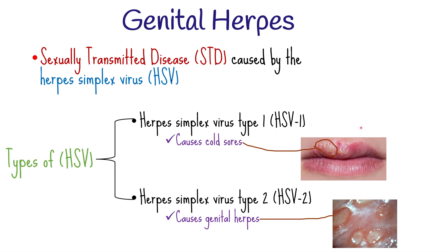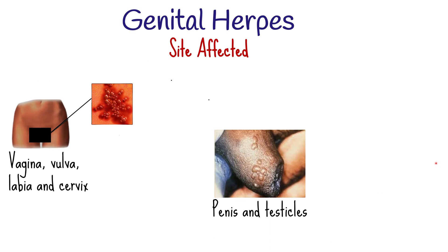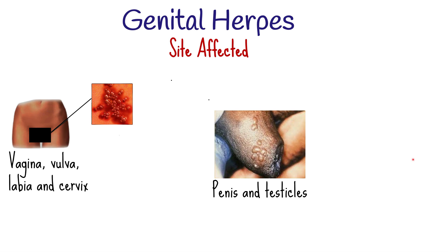Individuals suffering from genital herpes develop sores and blisters that usually form on or inside the genital areas and the area surrounding it. In females, the most commonly affected areas are the vagina, vulva, labia, and cervix. In males, the penis and testicles are usually affected.